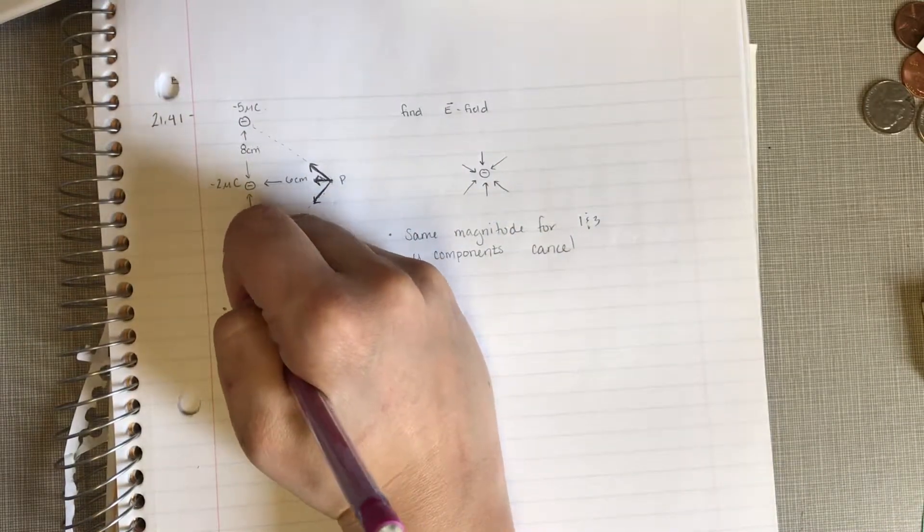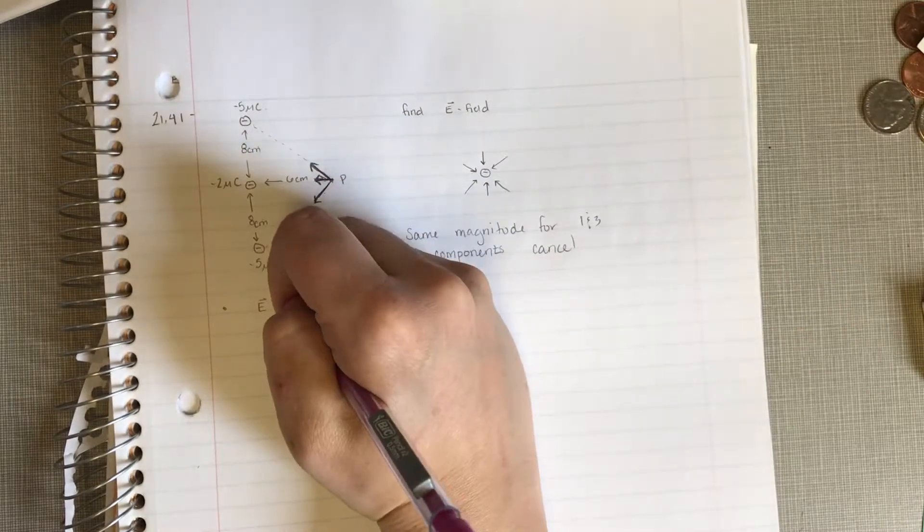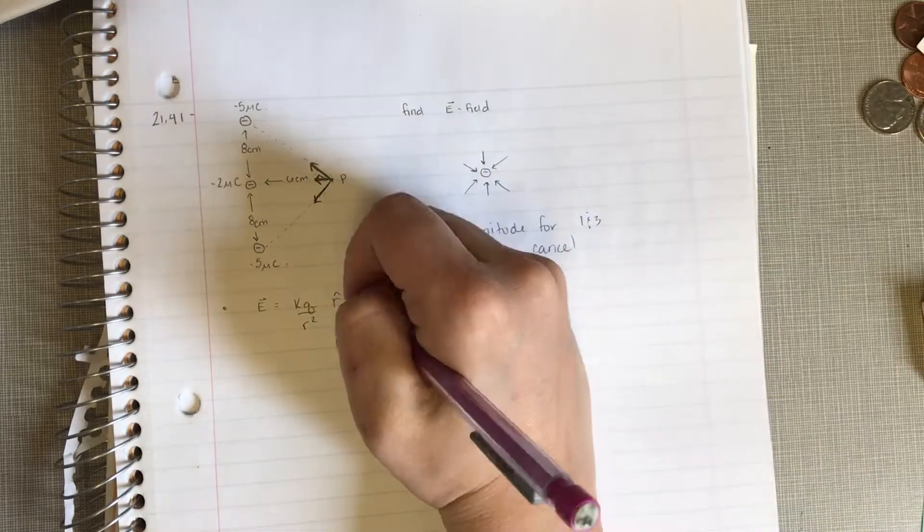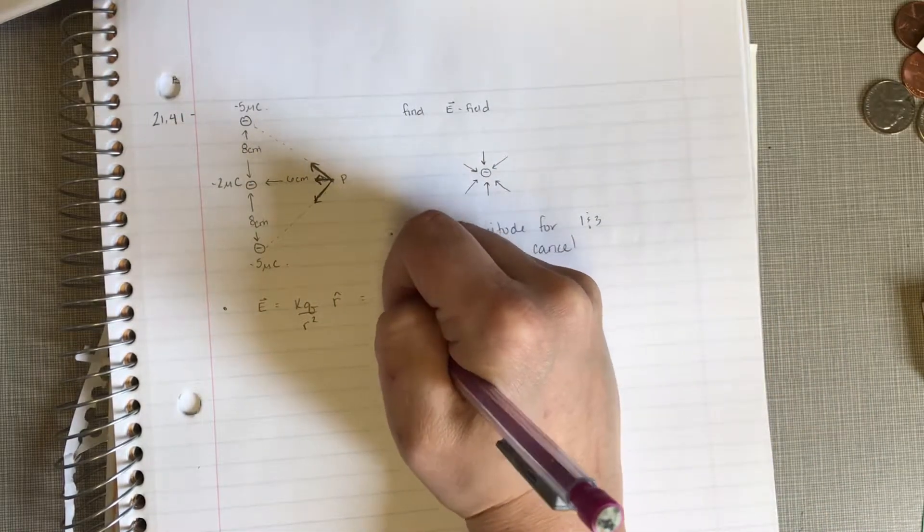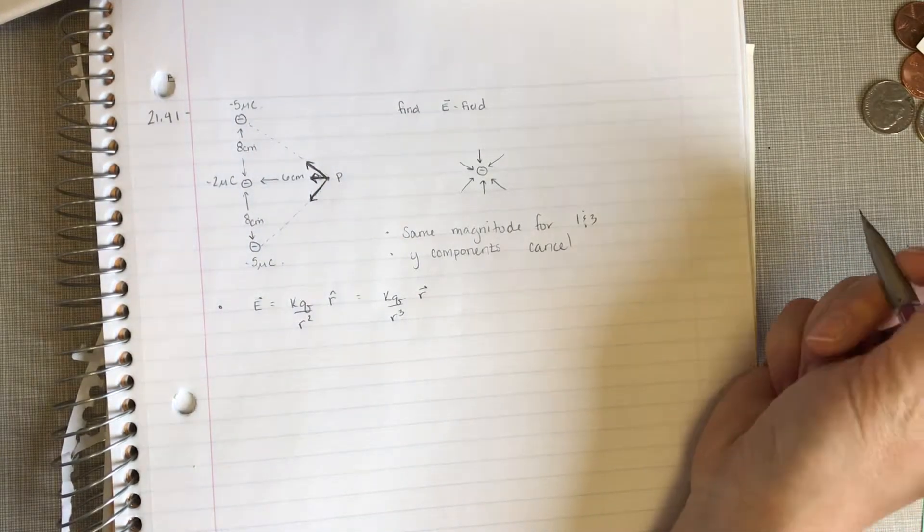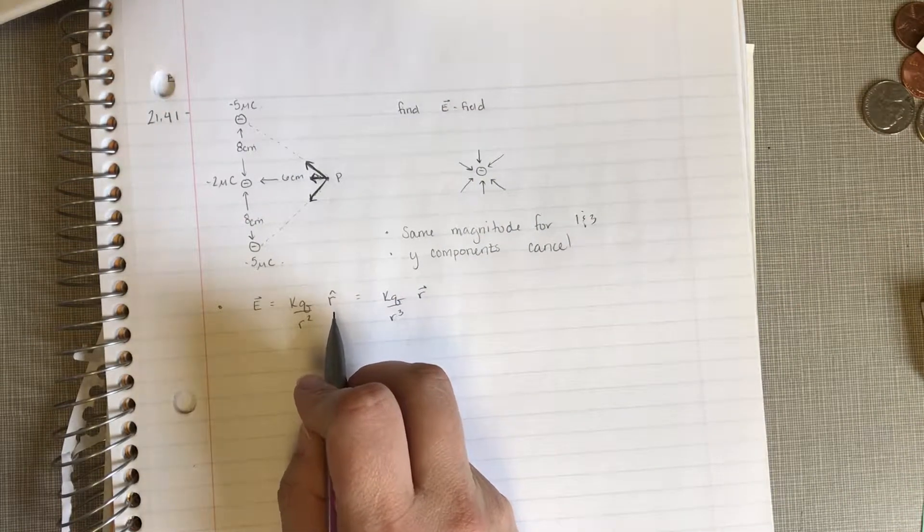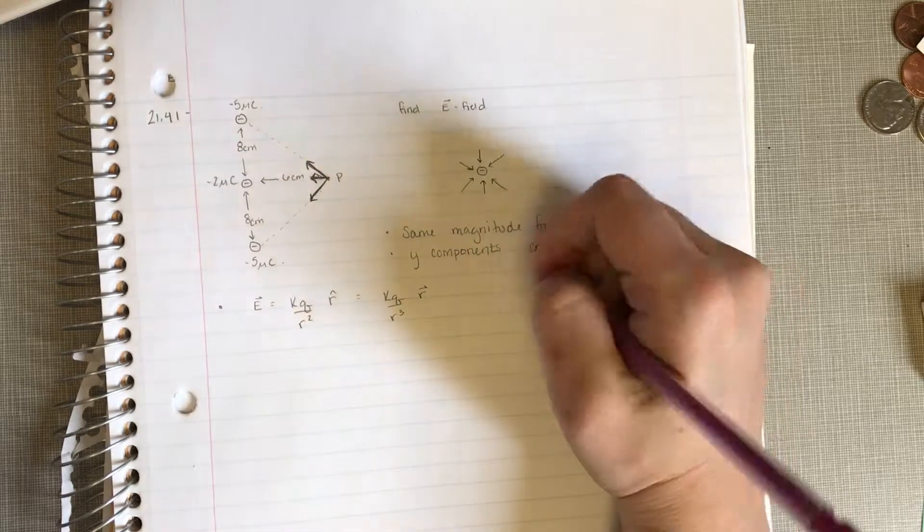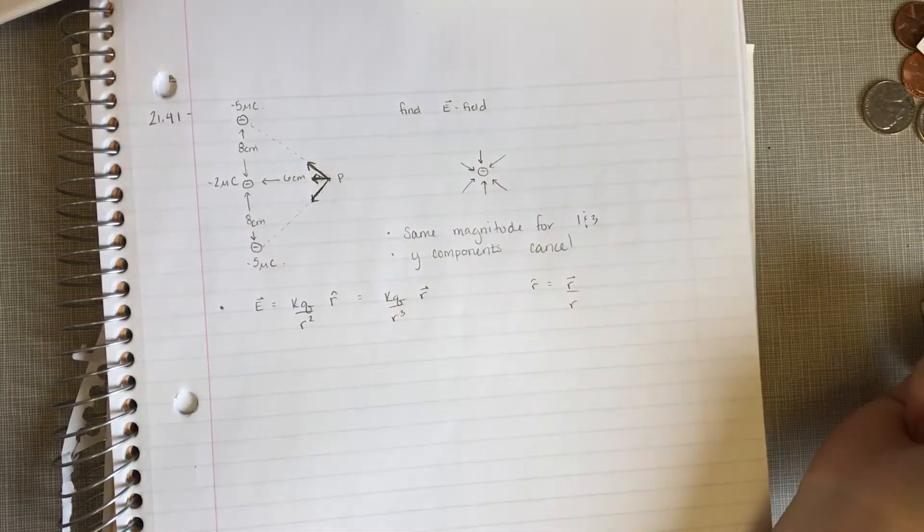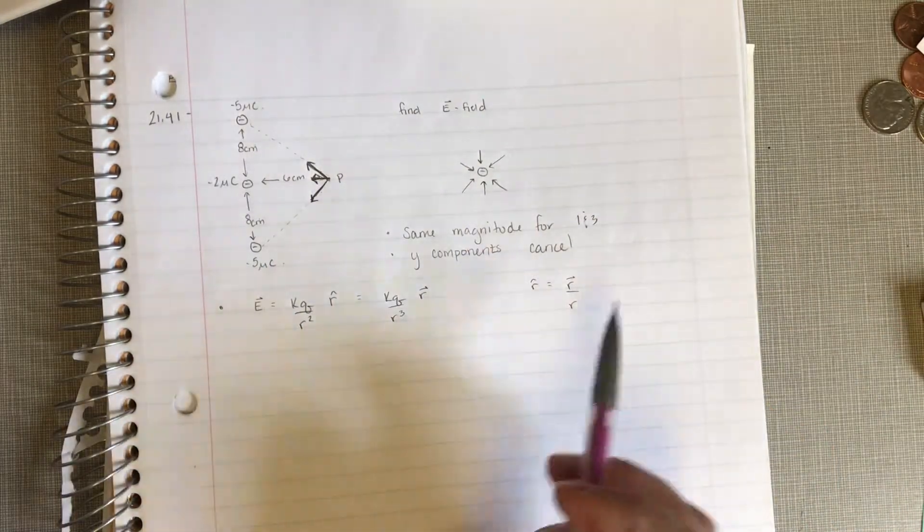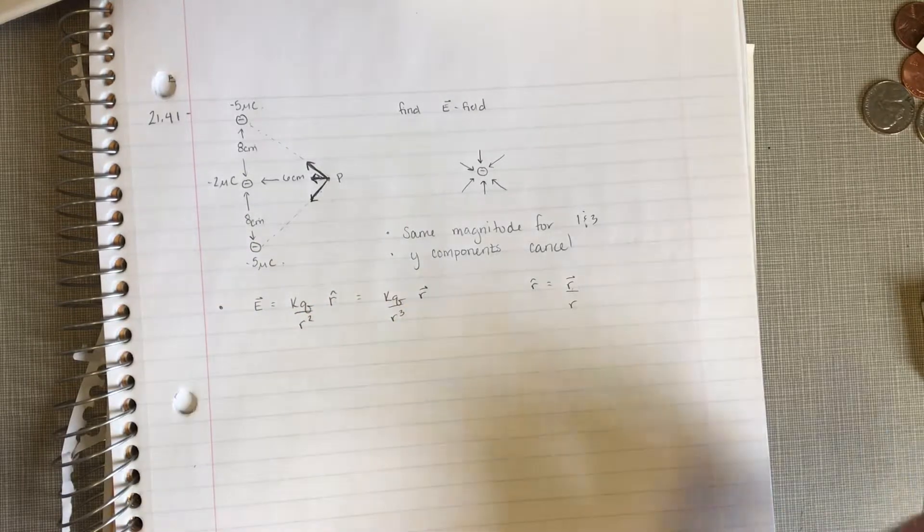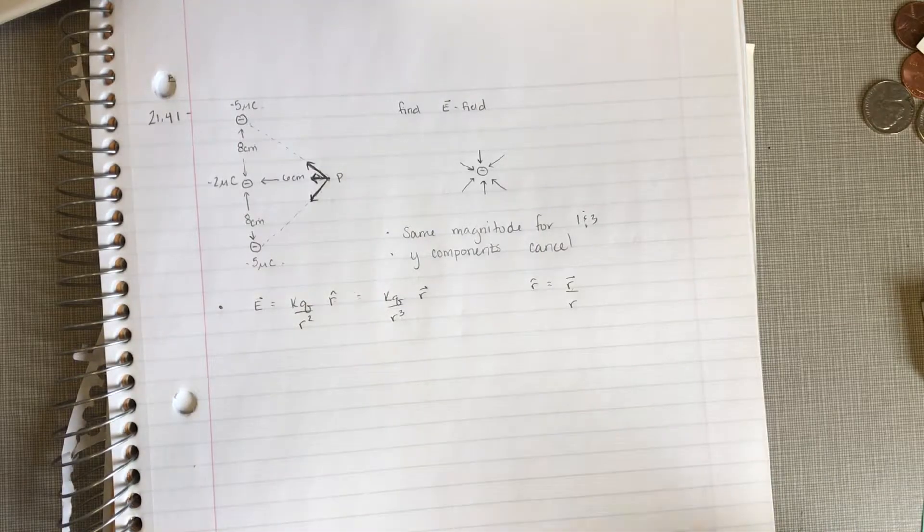So the electric field due to a point charge, it's given by Coulomb's law, has kq over r squared r hat and it can also be written as kq over r cubed r vector. These two versions of the equation are exactly the same because r hat is the unit vector that points towards the place that you care about. And unit vectors, if you remember from math class, are just the regular vector divided by the magnitude. So you can see that if we plug that in over here, we get r vector with an extra factor of r right here. Same thing. It's a matter of convenience which ones you decide to use.